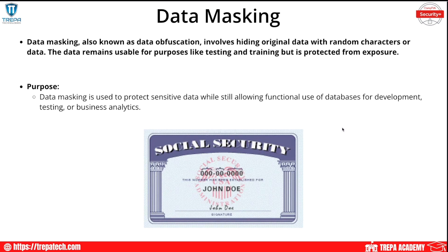Tokenization is another way we can protect database information beyond just encryption. The last thing we're talking about is data masking. We have two types: static and dynamic. Static data masking is done on a copy of the data, is irreversible, and the masked data is used in non-production environments. Dynamic data masking masks data in real time as it is requested from the database — the actual data is not altered; it is masked when displayed to unauthorized users. Data masking protects sensitive data while still allowing functional use of databases for testing or business analytics.